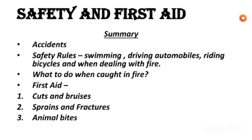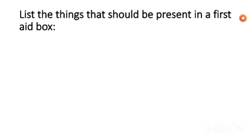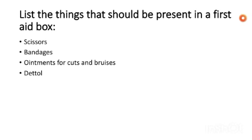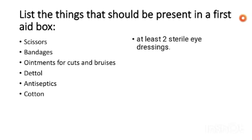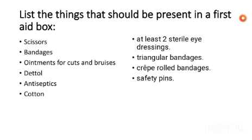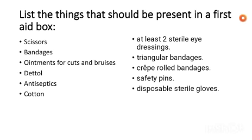We also saw first aid for cuts and bruises, pains and fractures, and animal bites. Now let us solve the worksheet. List the things that should be present in the first aid box. The answer includes: scissors, bandages, ointments, antiseptics, cotton, eye dressings, triangular bandages, crepe rolled bandages, safety pins, disposable gloves, etc.